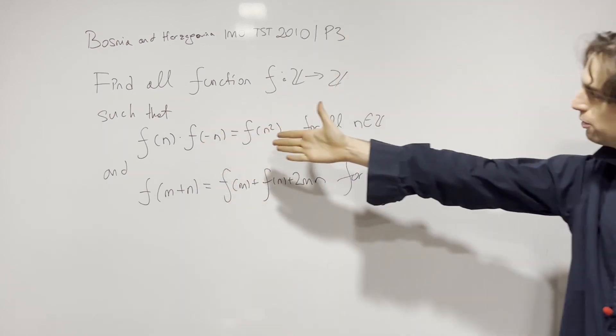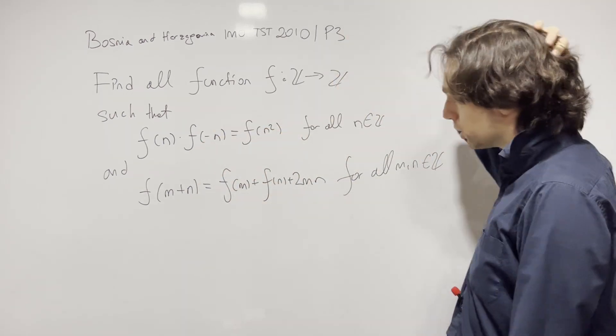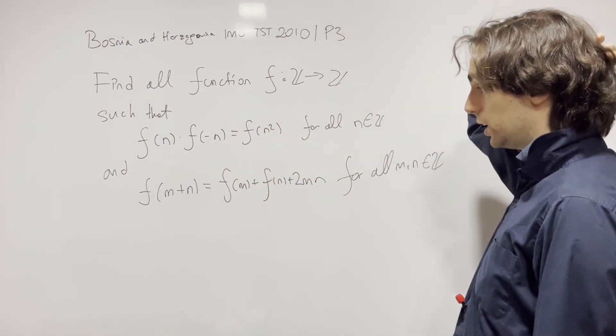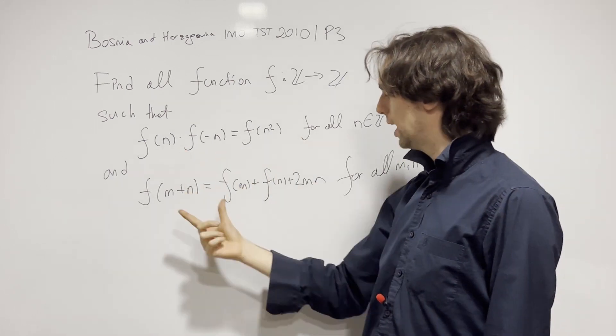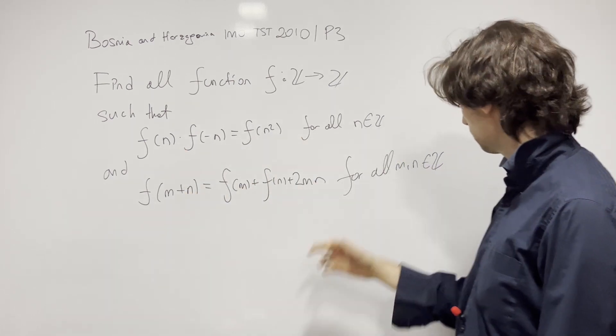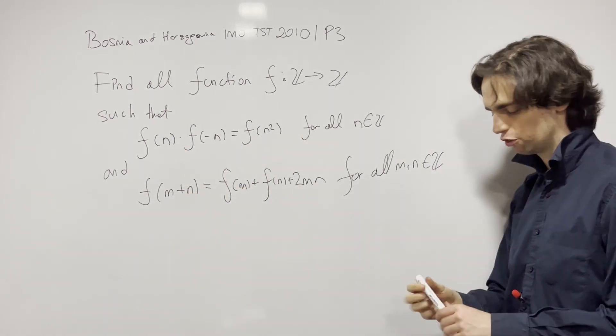So what are we going to do here? Find all functions from the integers to the integers such that these two conditions are true for all m and n in the integers.